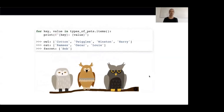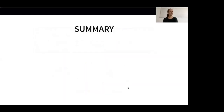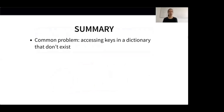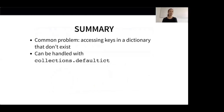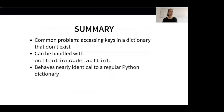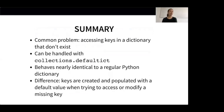There are more use cases for defaultdicts — for example, we could use it to count the number of pets of each type, so maybe you want to use this as an exercise after the presentation. To sum up: we started out with a common problem that often occurs when working with dictionaries, namely accessing and modifying keys that don't exist. We learned that this can be solved using the collections.defaultdict class, which behaves nearly identical to a regular Python dictionary, but accepts a callable constructor whose return value will be used if a requested key cannot be found. This can be useful in several situations, for example when grouping objects.